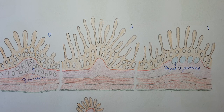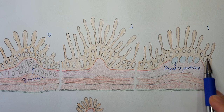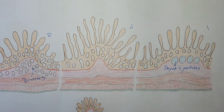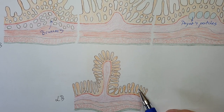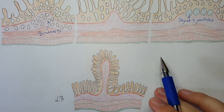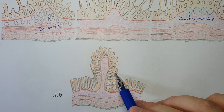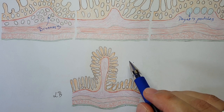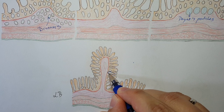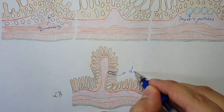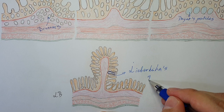In the ileum there is a structure called Peyer's patches — aggregated lymphoid nodules that are important for immune surveillance, containing many immune cells. In a quick comparison between the large and small bowel: the large bowel also has mucosa, submucosa, muscular layer, and serosa, but does not have the semicircular folds or villi — it only has Lieberkühn glands.